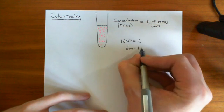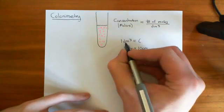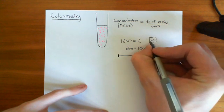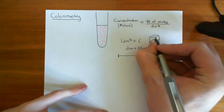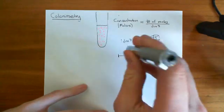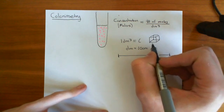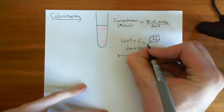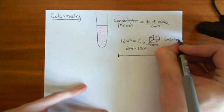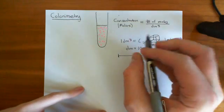A decimetre is ten centimetres, so about that sort of length. A decimetre cubed is basically a cube which is a decimetre by a decimetre by a decimetre — and that is one litre of fluid, which is a thousand millilitres. A millilitre, by the way, is one centimetre cubed, so one millilitre is one centimetre cubed. This little cube I've drawn here is probably just about one centimetre cubed.